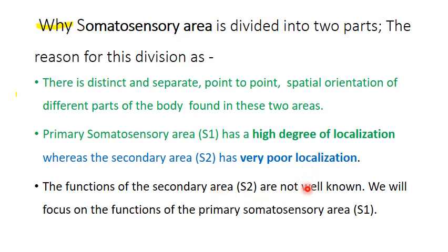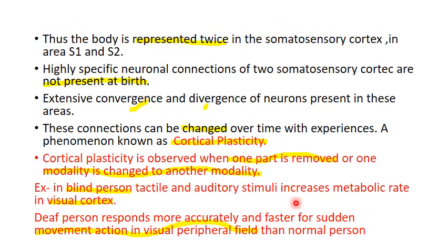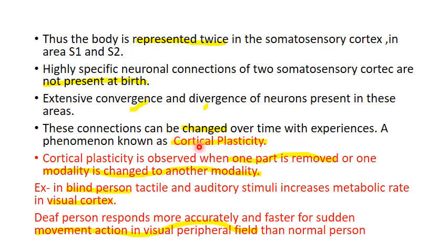The function of S2 is not very well known, but we think that it assists S1. The body part is represented twice in the somatosensory cortex — in both the S1 and S2 areas. The highly specific neural connections of the somatosensory cortex are not present since birth but can be changed over time with experience through convergence and divergence of neurons — this phenomenon is known as cortical plasticity.